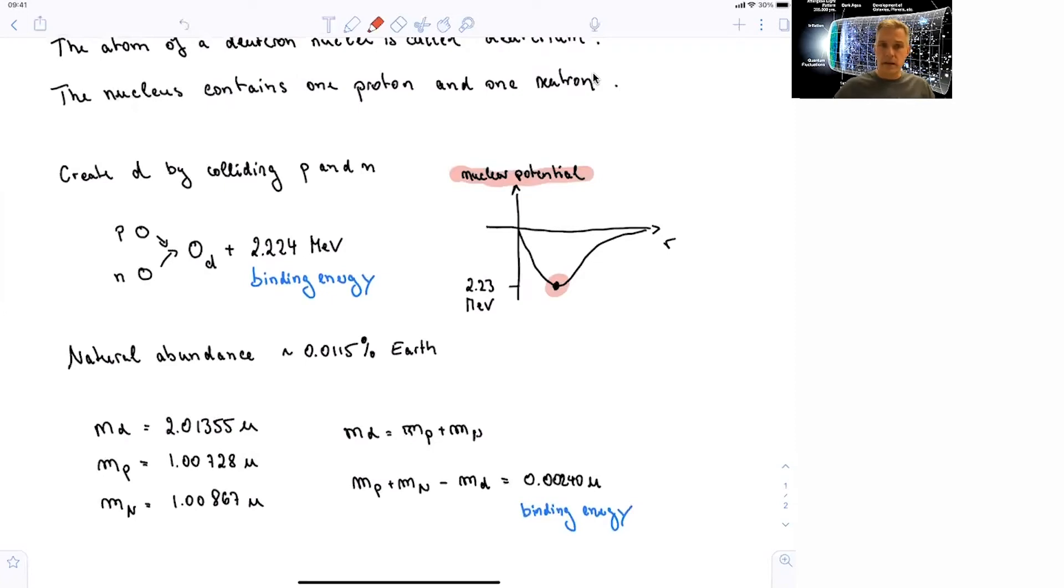To give you the numbers, the mass of the deuterium is 2.01355 in atomic units. And the mass of the proton is about 1, the mass of the neutron is a little bit bigger, but also about 1. So in order to now get the binding energy, so the energy which is kind of stored in the deuterium when it's binding together, the proton and the neutron, can be accessed by adding the proton and the neutron mass and subtracting the mass of the deuterium.